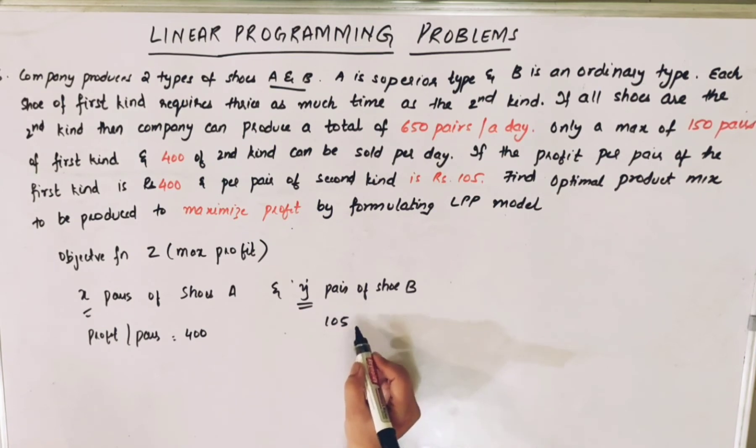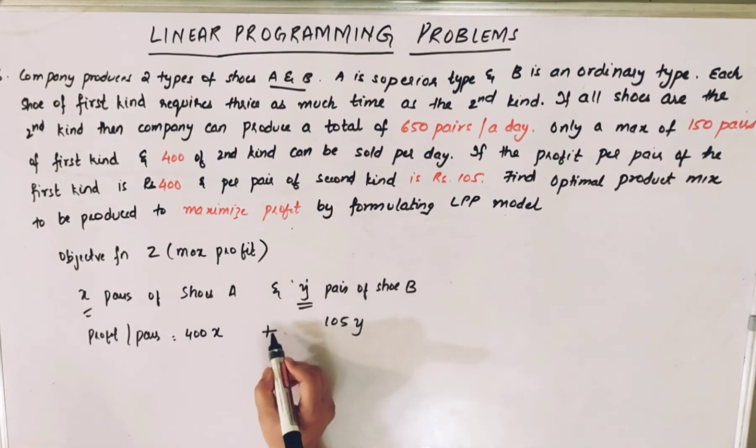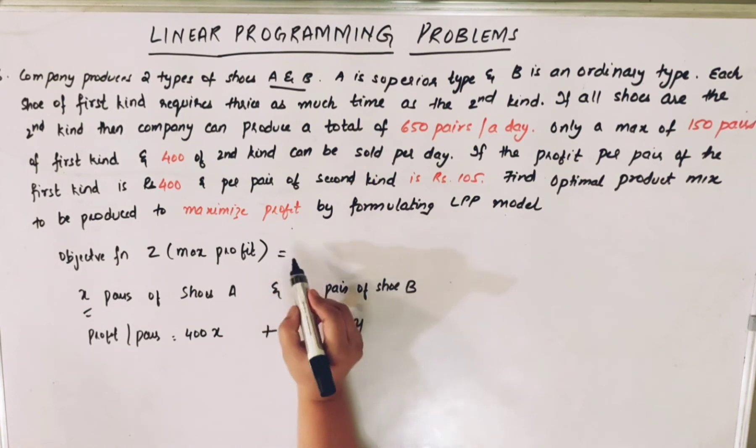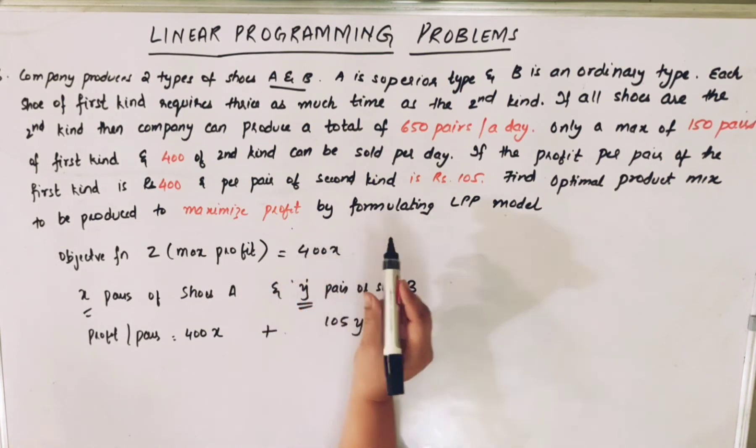First kind is 400 and second kind is 105 rupees. This is per pair. So for X pairs, it's going to be 400X. For Y pairs, it's going to be 105 into Y. If you add, you're going to get the total profit. So the objective function is 400X plus 105Y.